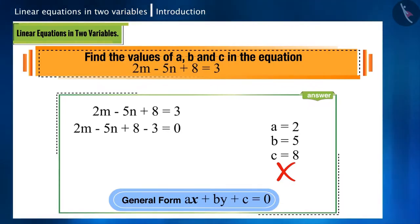That means 2m minus 5n plus 5 equals 0. Now we can very easily find the values of a, b, and c from this.